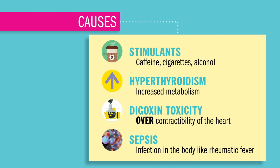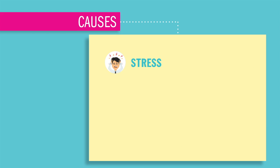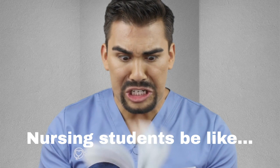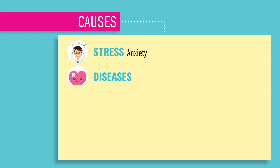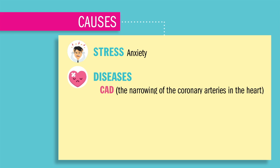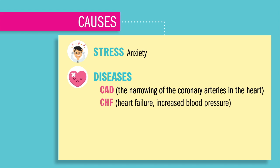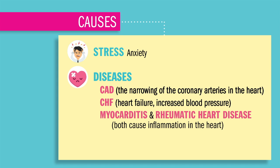Sepsis or infection of the body, like rheumatic fever, can also cause premature contractions. And lastly, stress like anxiety from normal daily emotional struggles. But also diseases that put added stress and inflammation on the heart — like CAD, the narrowing of the coronary arteries, add stress to the heart. Or CHF, heart failure, increases the blood pressure, adding pressure on the heart. Even myocarditis and rheumatic fever both cause inflammation to the heart.